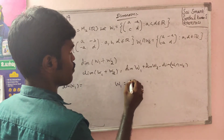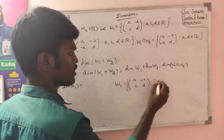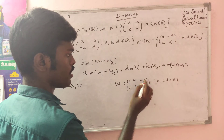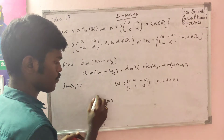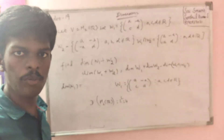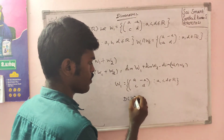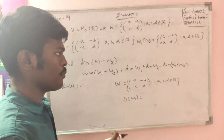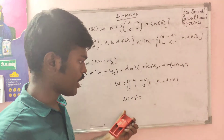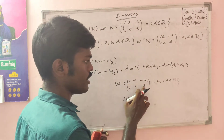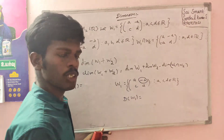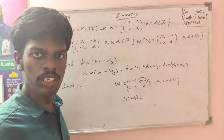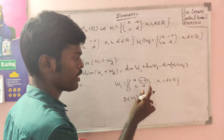First, we analyze W1: [a, minus a; c, d] such that a, c, d belong to the real numbers. The general dimension of M2 of R is 2 squared equal to 4. The dimension of W1 depends on the number of independent variables. We can use the number of independent variables: a, c, d. The value in position (1,2) is minus a — it depends on a. So the independent variables are a, c, d. Therefore, the dimension of W1 is 3.